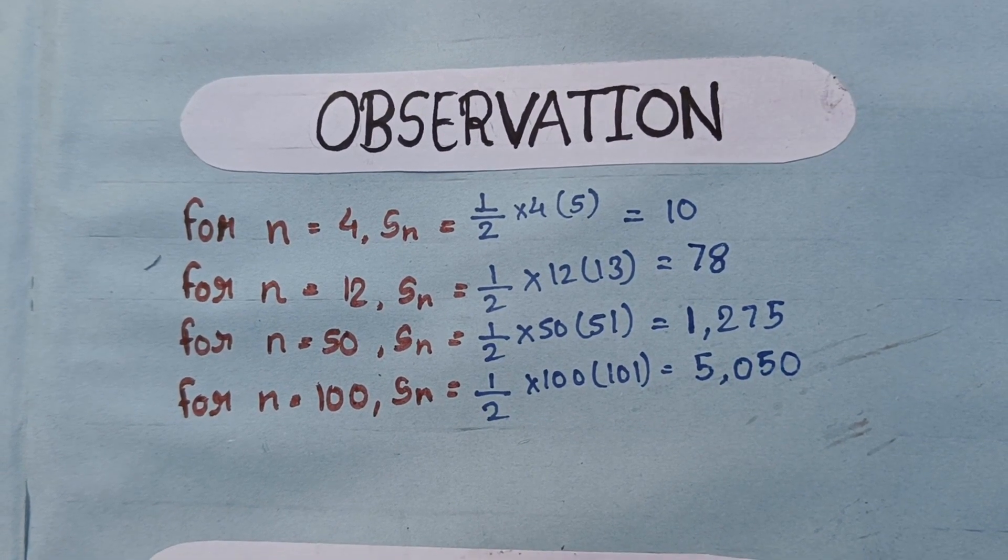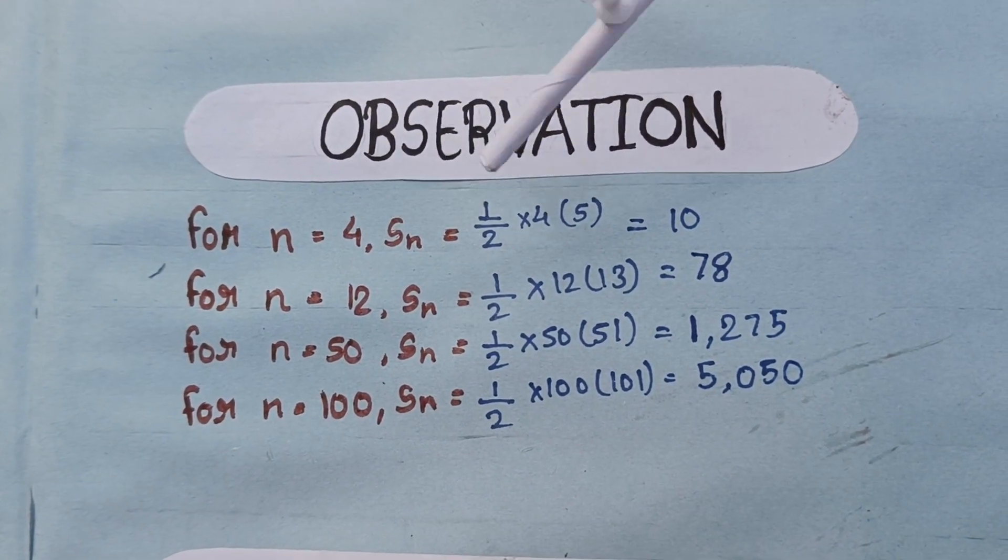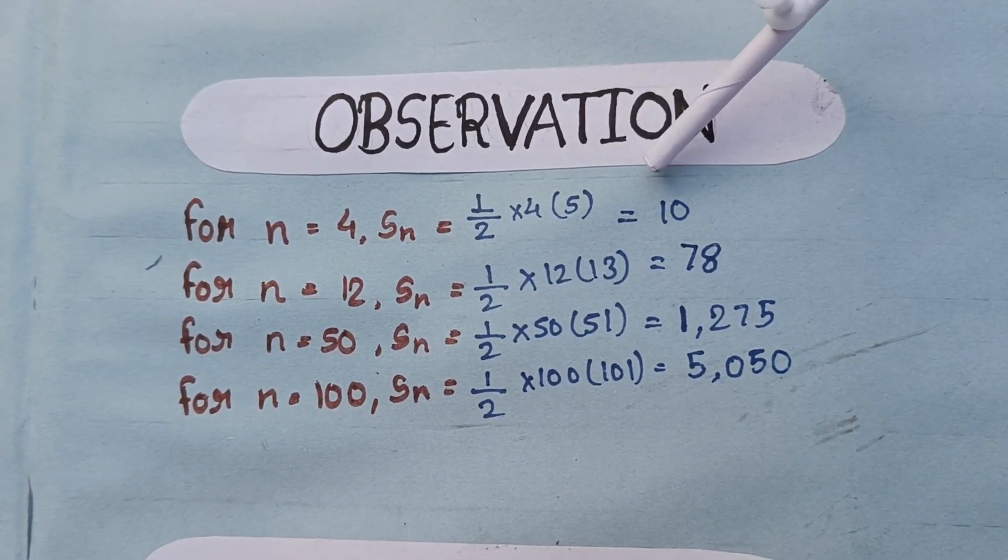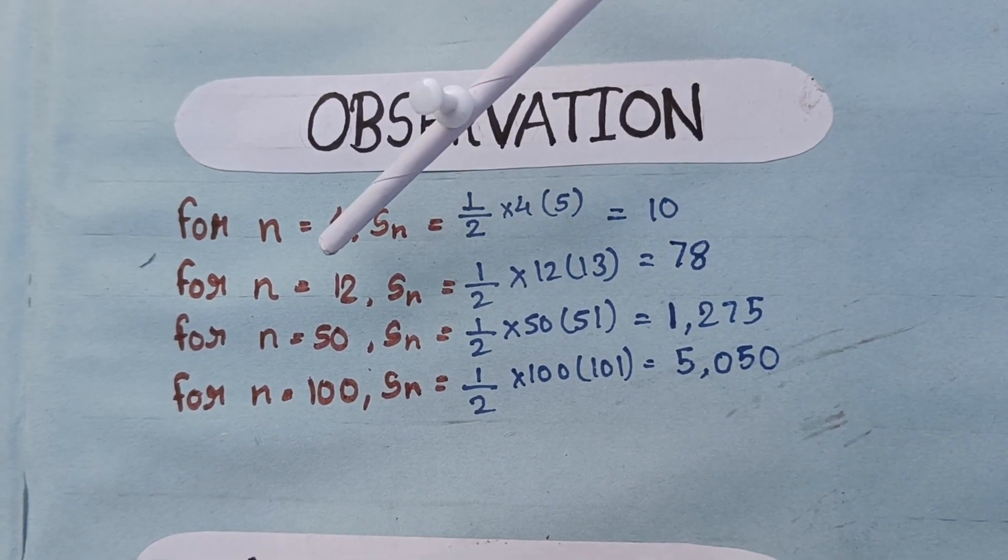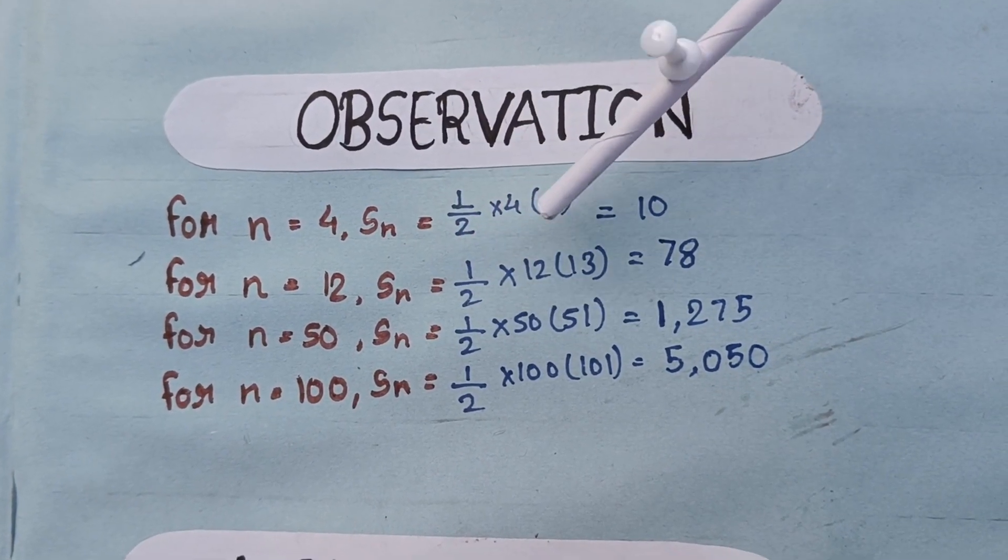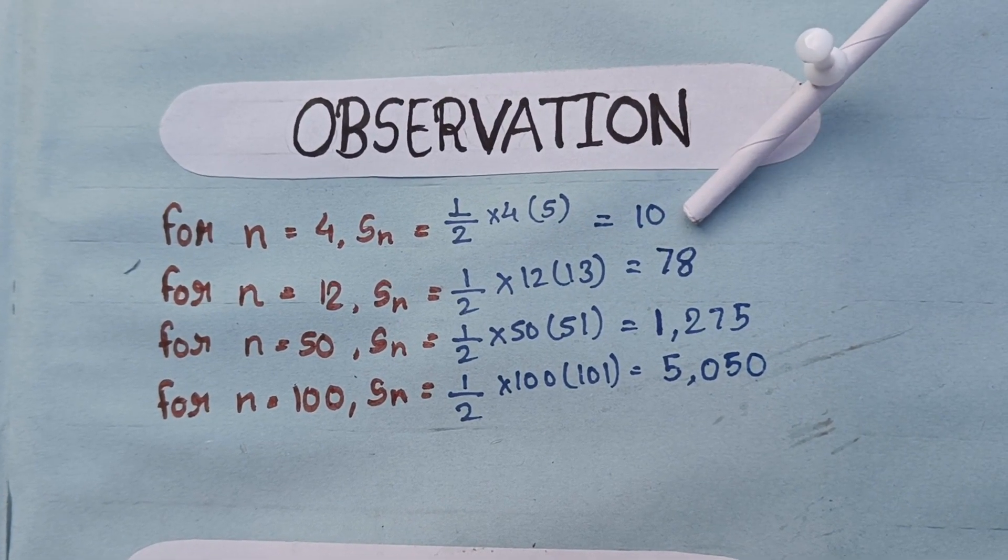The observation is for N equals 4, sum is half of 4 into 5 is 10. And for N equals 12, sum is half of 12 into 13 which gives 78.